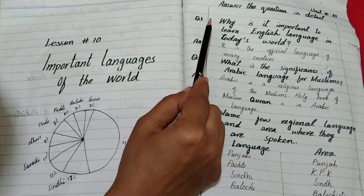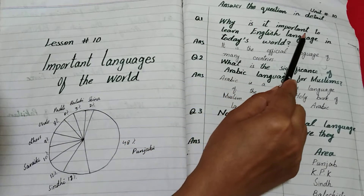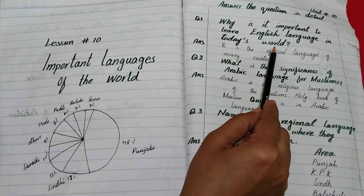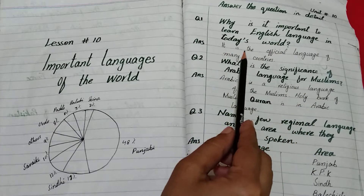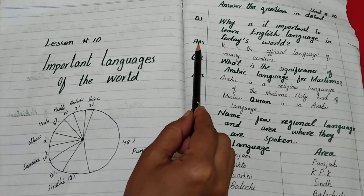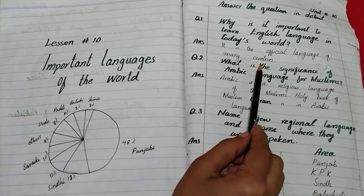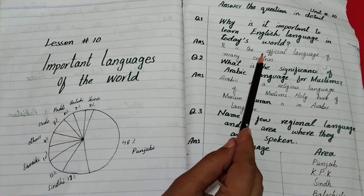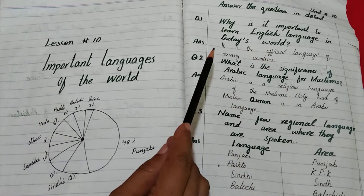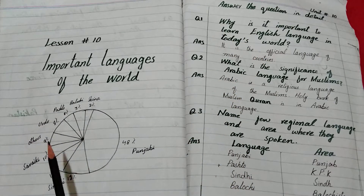Answer question: First question is, why is it important to learn English language in today's world? (Aaj kal dunia mein English language seekhna kyun zaroori hai?) It is the official language of many countries — یہ بہت سارے ممالک کی official language ہے، یعنی دفتری زبان ہے، اس لیے اس کو سیکھنا ضروری ہو گیا ہے۔